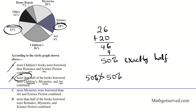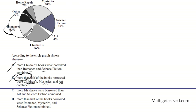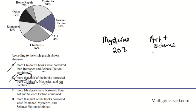Let's take a look at C. It says, More mystery were borrowed than art and science fiction combined. So mysteries is 20%. And art plus science is 4 plus 18. If we combine that together we have 22%. So is mysteries greater than art and science? Absolutely not. Mysteries is less than art and science because art and science is 22% which is greater than 20. So C is wrong.